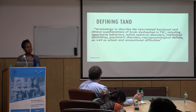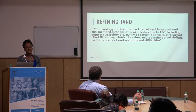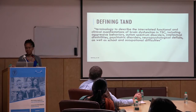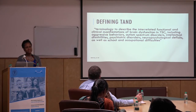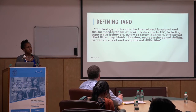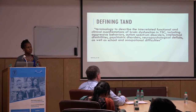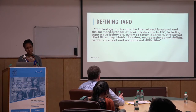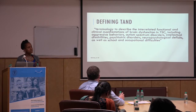So let's talk about defining TAN. TAN is an acronym that stands for Tuberous Sclerosis Associated Neuropsychiatric Disorders. In essence, it's an umbrella term used to describe all of the neurodevelopmental and neuropsychiatric things that can happen in tuberous sclerosis. They don't happen to everyone, but individuals are at high risk because of having tuberous sclerosis.